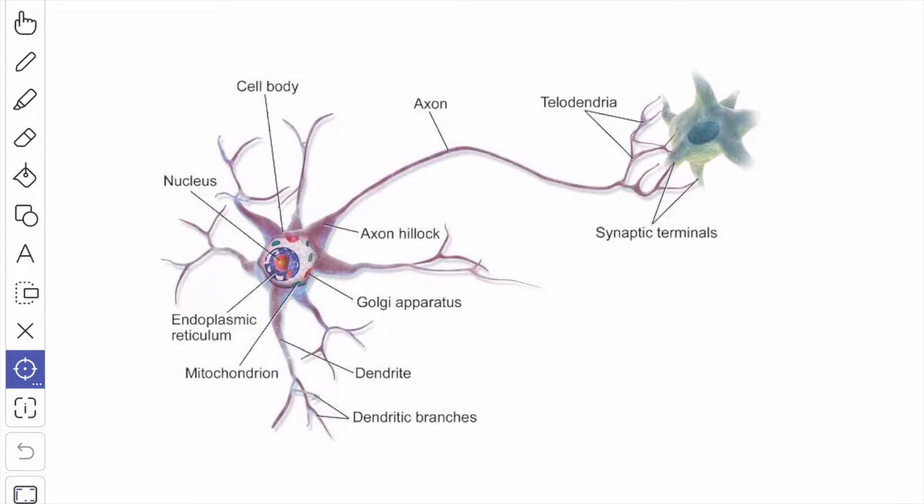The dendrites branch repeatedly and end in terminal arborizations. Numerous dendritic spines project from the terminal branches and increase the area of contact with the axons of the adjacent neurons at the synaptic junctions. Dendrites convey the impulses from the periphery to the cell body.